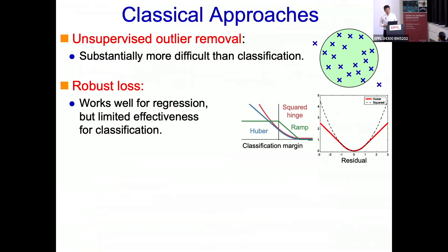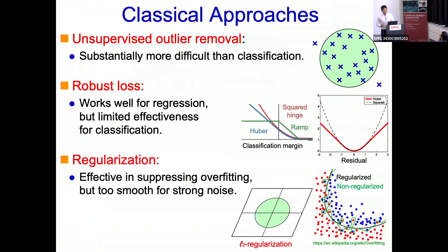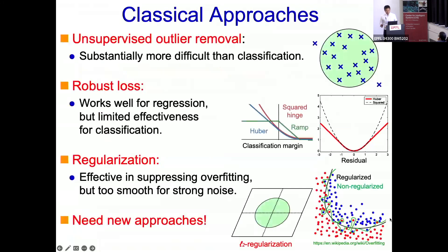Robust loss functions are not quite as robust as in the regression case. Then people may want to use regularization — smoothing the solution to avoid overfitting — and this is always available. In regression this is quite nice, but in classification, if we regularize the solution we get a nice smooth solution, but once we have some label noise here and there, smoothing is actually not that useful. We need to over-smooth to reduce the effect of noise, and the solution is not good. We need new approaches to really cope with label noise.